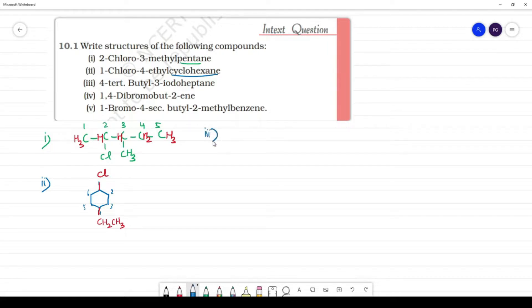Third one: 4-tertiary-butyl-3-iodo-heptane. Heptane is 7 carbon: 1, 2, 3, 4, 5, 6, 7 carbon.